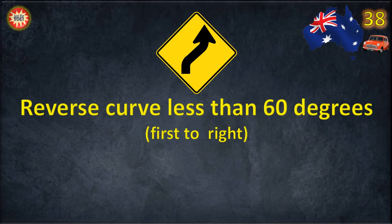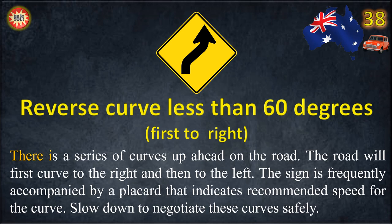Reverse curve less than 60 degrees, first to right. There is a series of curves up ahead on the road. The road will first curve to the right and then to the left. The sign is frequently accompanied by a placard that indicates recommended speed for the curve. Slow down to negotiate these curves safely.